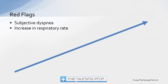There are two red flags to look for in a patient who has a respiratory problem. Oftentimes these are seen before you see any other symptoms. That is subjective dyspnea and an increase in respiratory rate. Now that may sound very straightforward. Subjective dyspnea — it's coming from the patient. The patient is saying, 'I feel short of breath.'